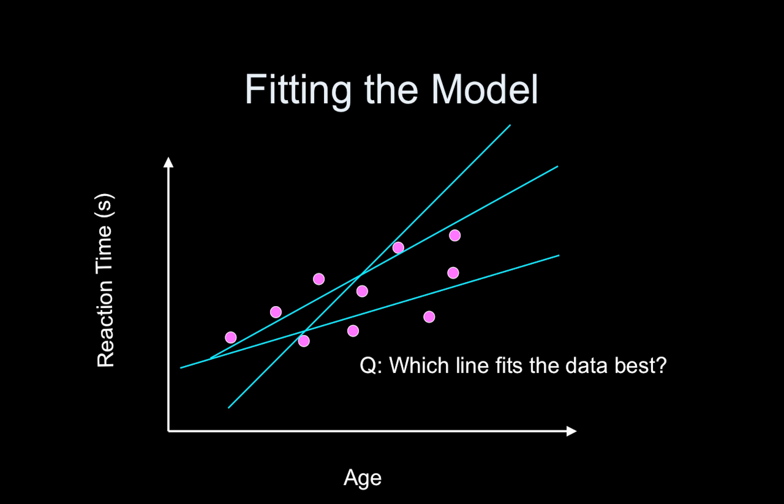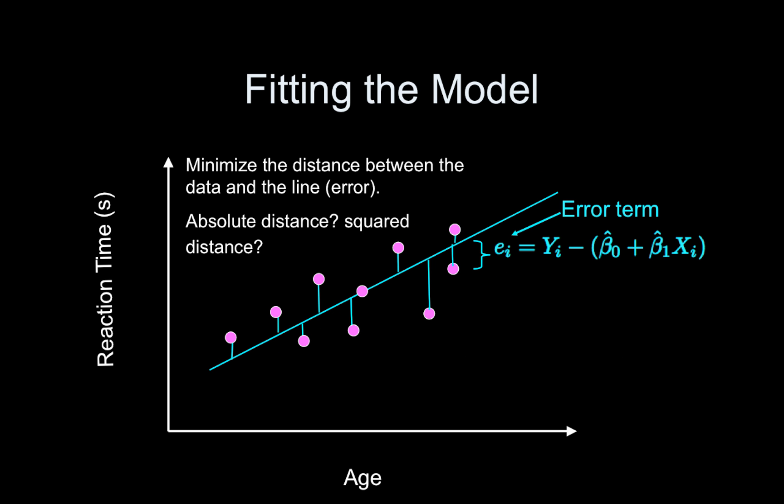So in fitting models you always come up with some type of loss function, or some type of function you want to minimize. And in the case of regression, we want our line to be as close to the data as possible.